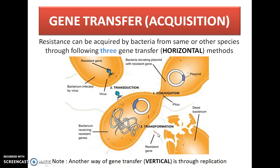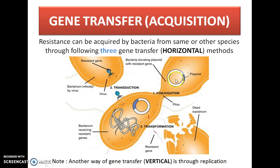The third method of horizontal gene transfer is transformation. In this process, a dead bacterium carrying the resistance gene undergoes lysis and fragmentation, releasing the resistance gene, which then gets transferred into a living bacterium. No vector is used for the transfer of the resistance gene from the dead bacterium to the alive bacterium. These three methods — conjugation, transduction, and transformation — ultimately transfer resistance genes and thereby confer resistance in bacteria.